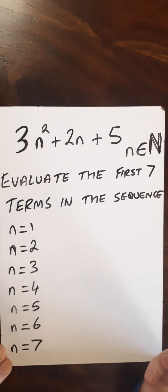Here I've got a quadratic sequence and I'm going to evaluate the first seven terms in the sequence. I'm going to show you a little shortcut after I've got the first few. Then we can go on forever with that shortcut.